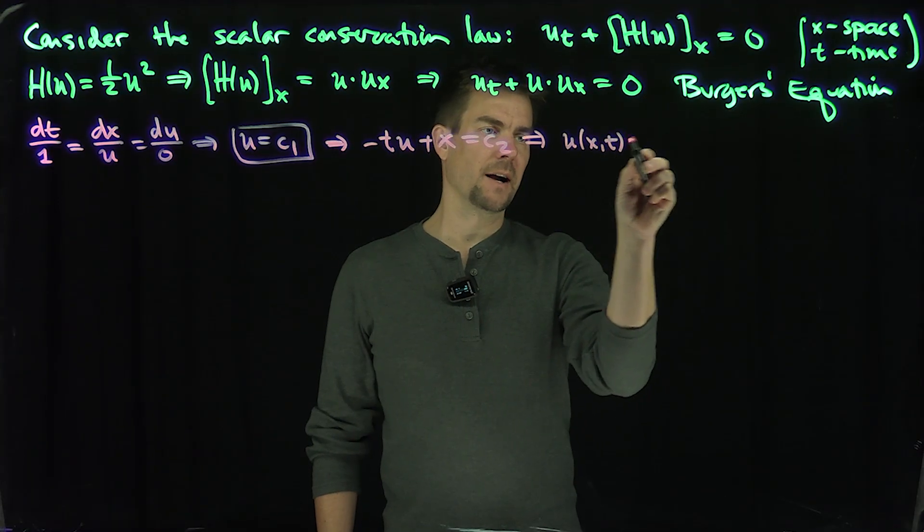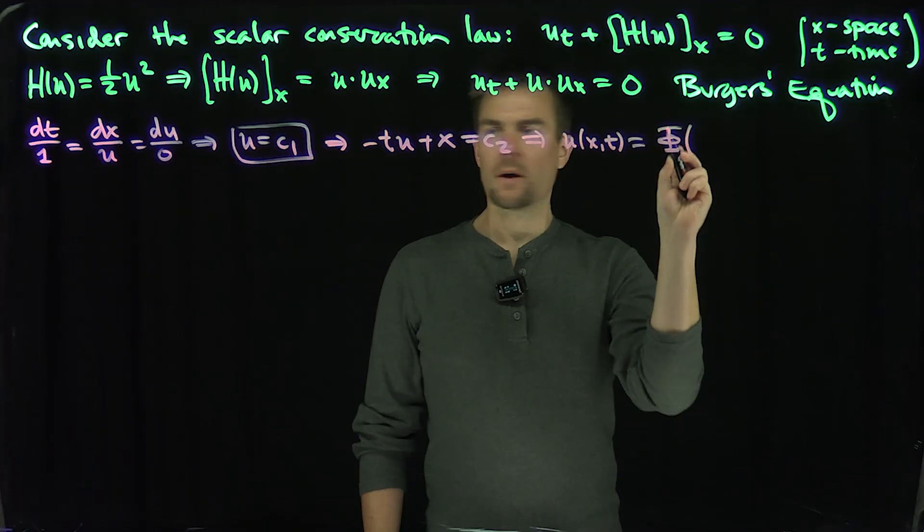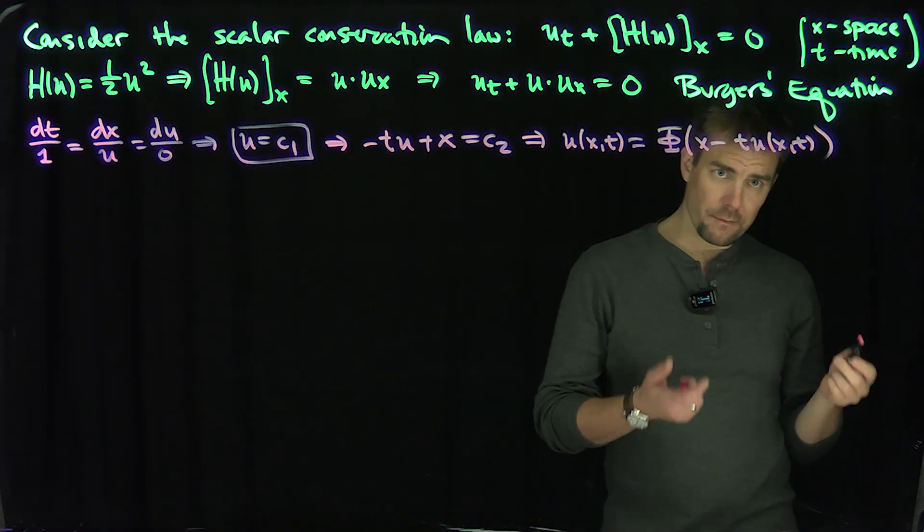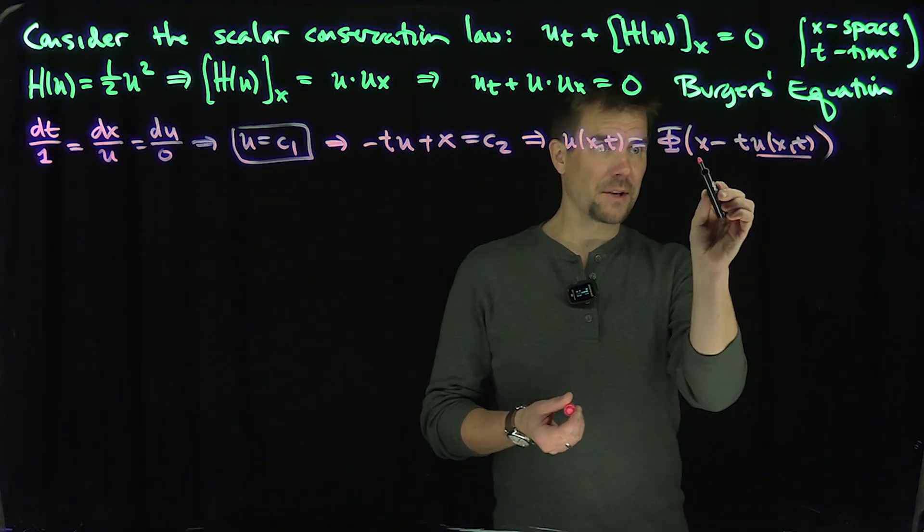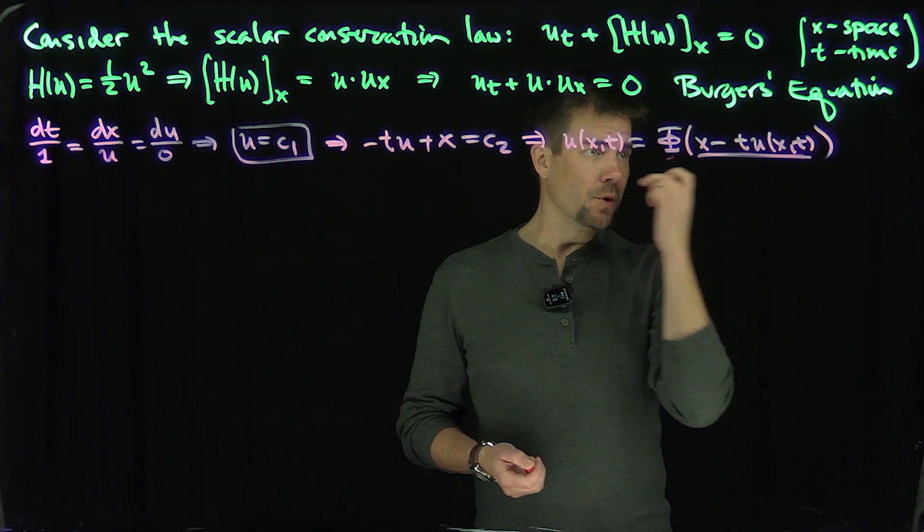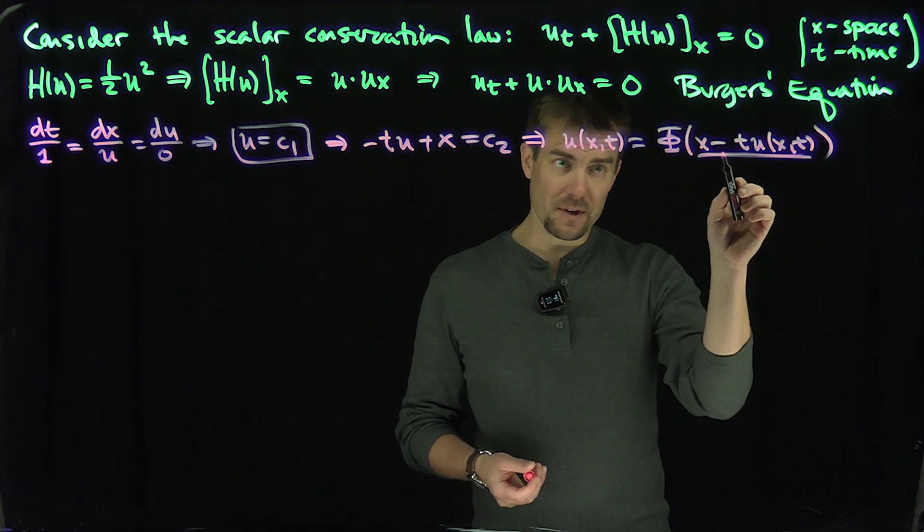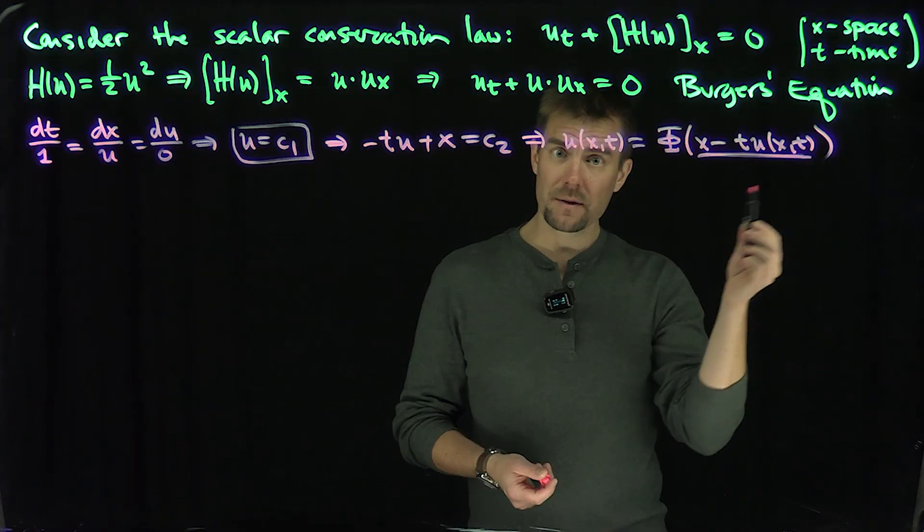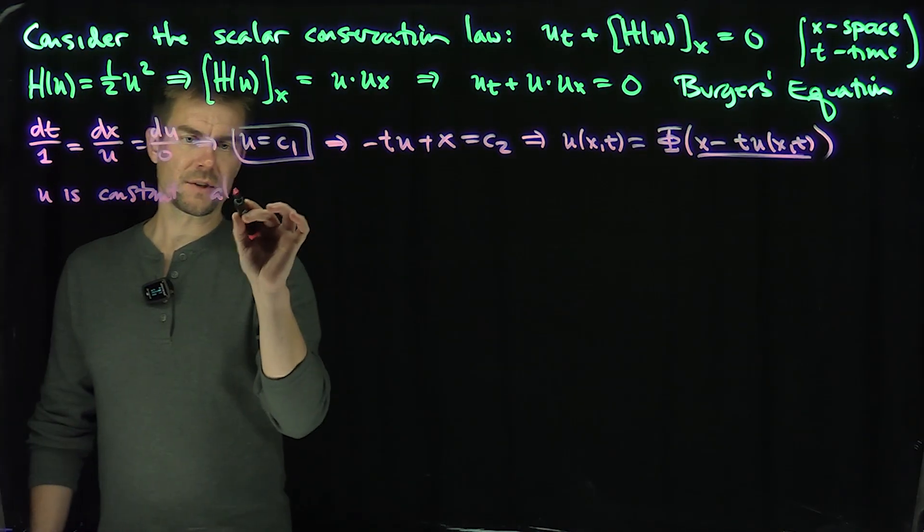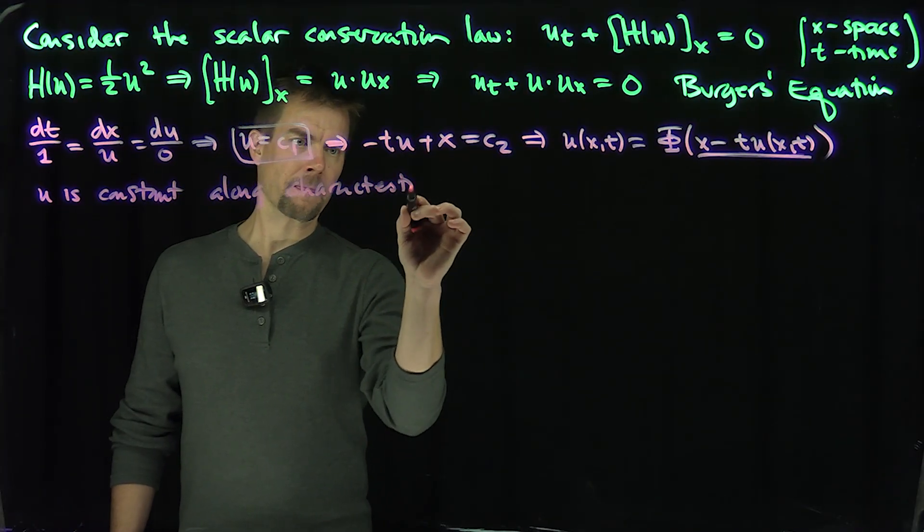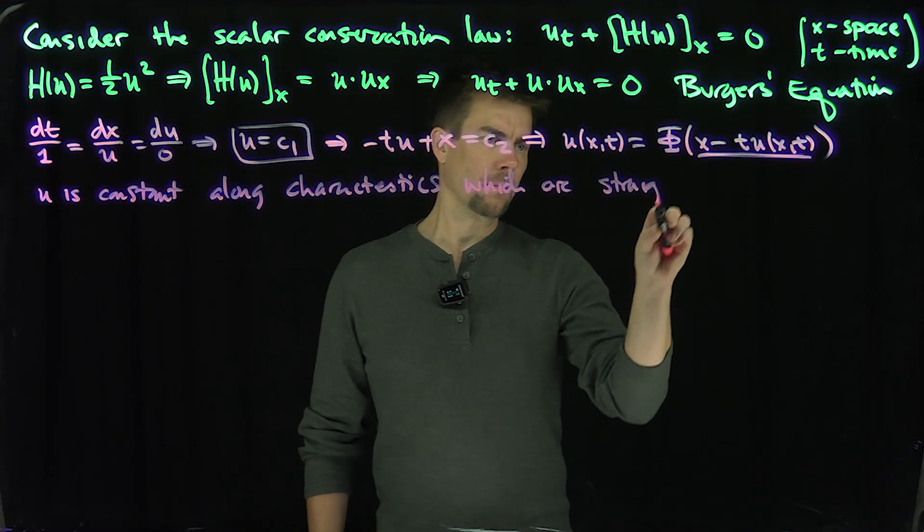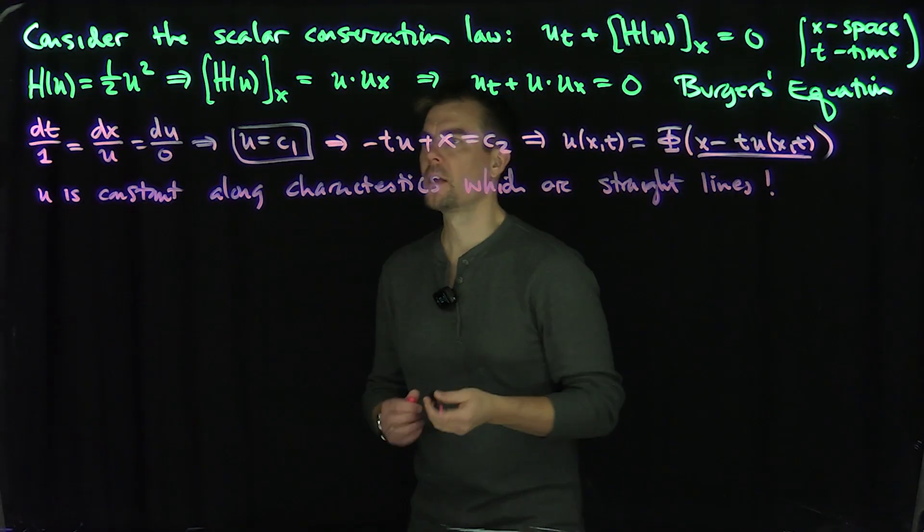And so our solution, u(x,t) can be implicitly defined as follows, as a function phi capital of x minus t u(x,t). So once I specify the value of u in the initial data, that will tell me the line. Once the initial data is specified, if I tell you what u is at time 0, then that will be the equation of this thing, will just be a line. So in other words, it's going to be constant along characteristics, which are straight lines.